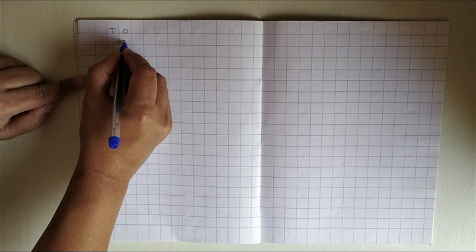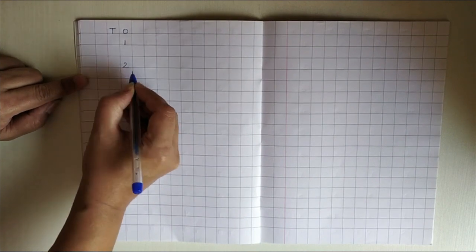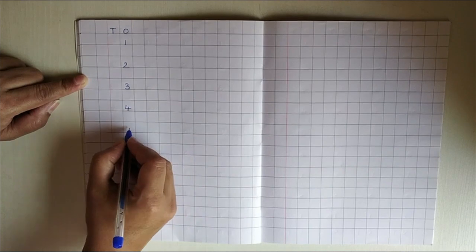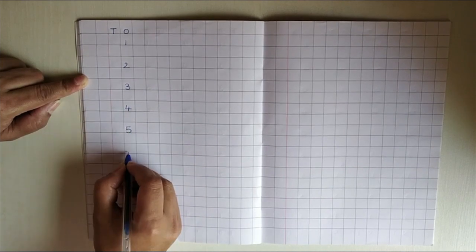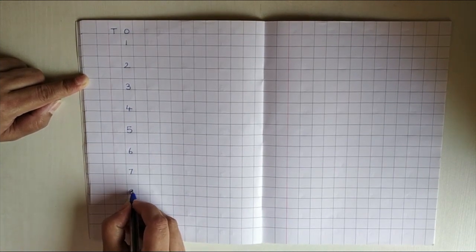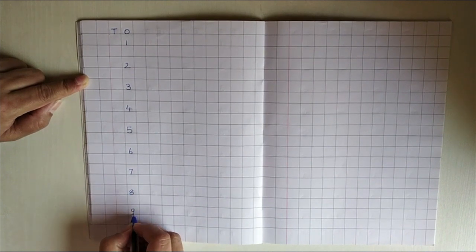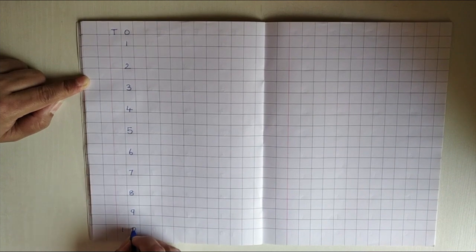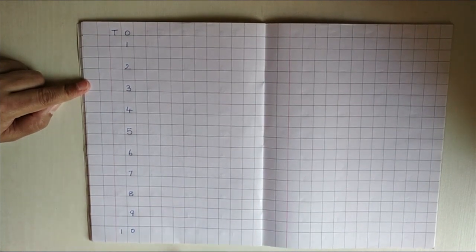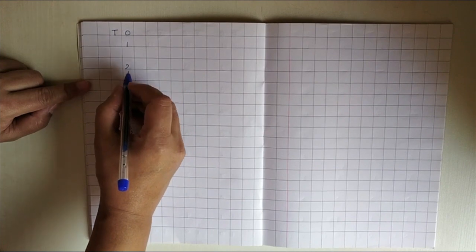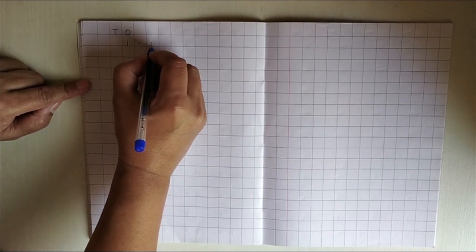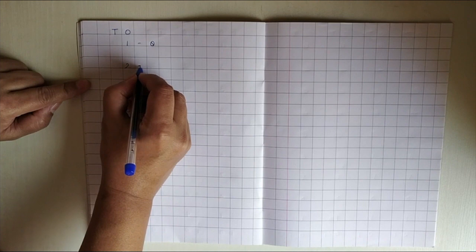Now, we are going to write numbers: 1, 2, 3, 4, 5, 6, 7, 8, 9, 10. Now, we are going to draw values. For 1, we will draw 1 ball. We will just draw balls children. Now, 2 balls.